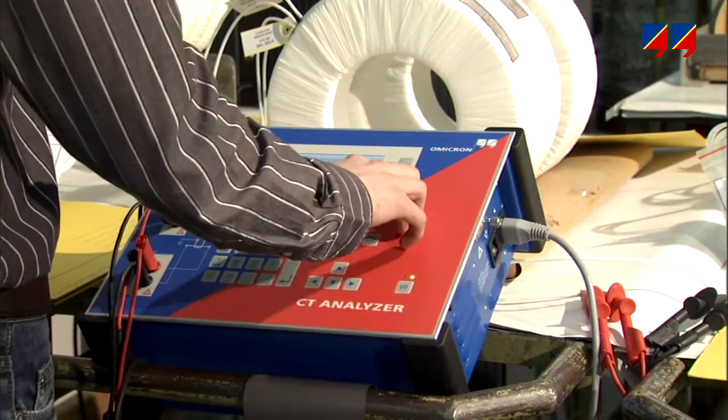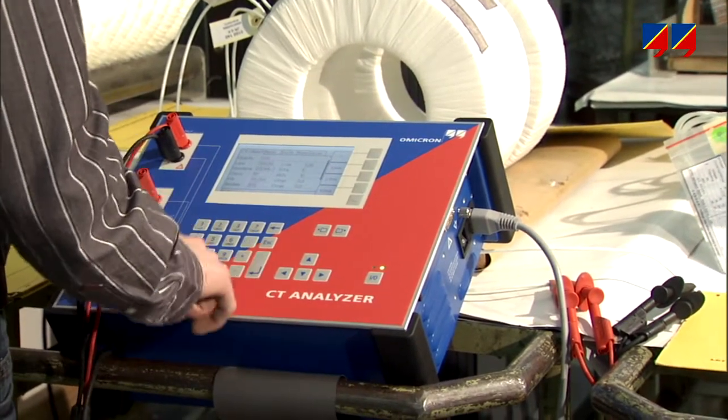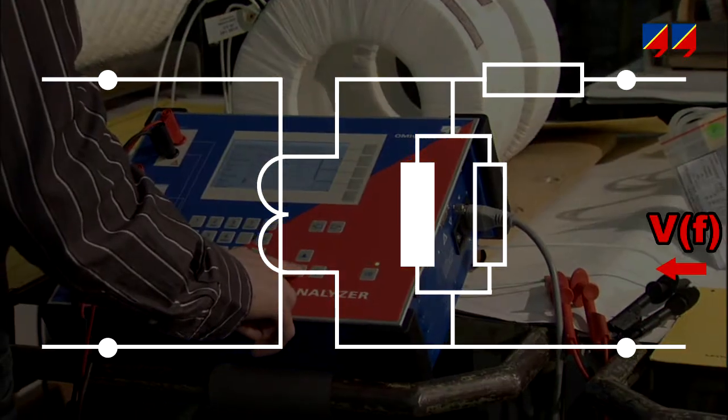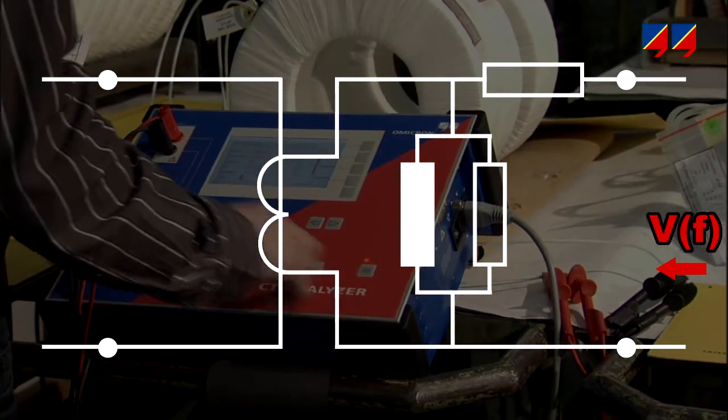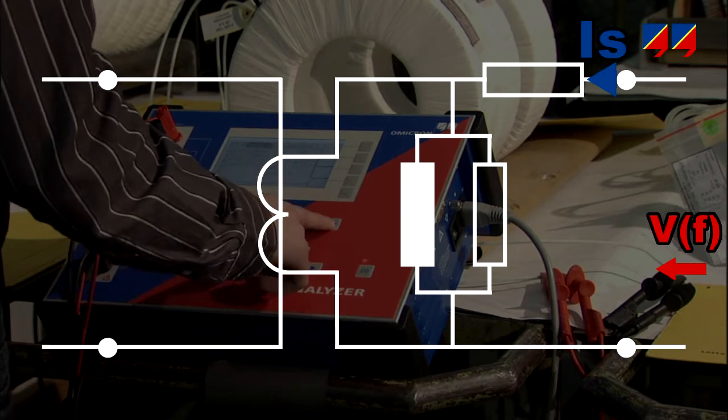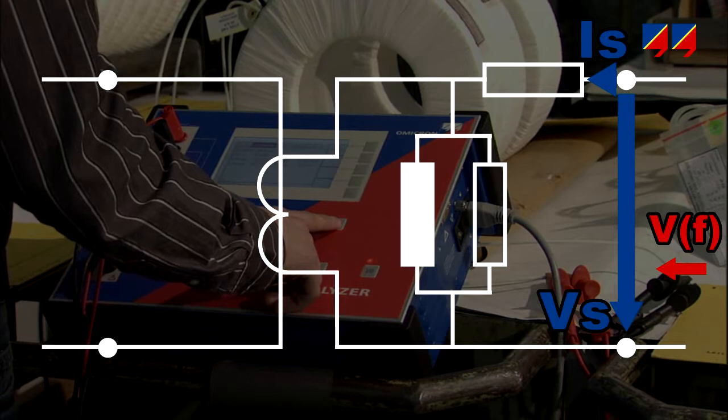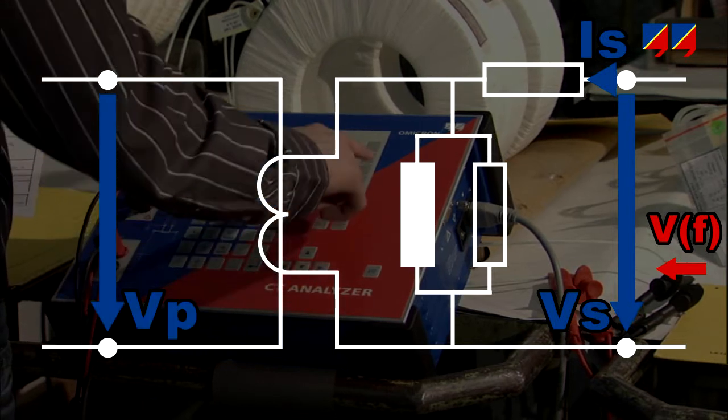CT analyzer determines all of the relevant parameters of a CT during a test run of typically one minute. It injects a variable frequency signal into the secondary side of the CT and measures the current injected into the secondary terminals and the corresponding voltage applied, as well as the voltage induced on the primary side.